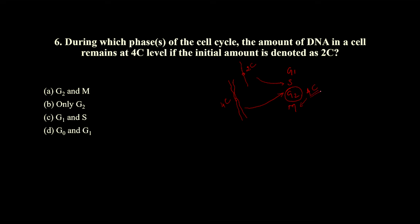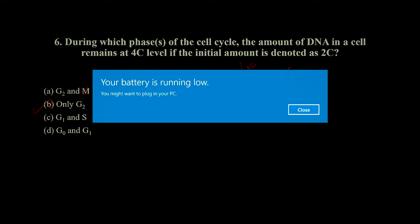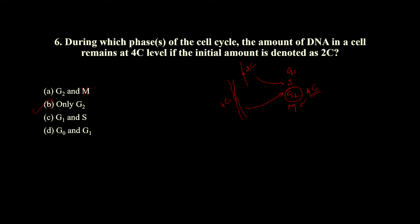Only in G2 phase will the amount remain at 4C. When it gets into M phase it may get separated. Option A — G2 and M — no, in M phase it is not at 4C level. Option C — G1 — no, in G1 it is at 2C level. Option D — G0 and G1 — wrong, G1 is at 2C. The correct option is B, G2 only.